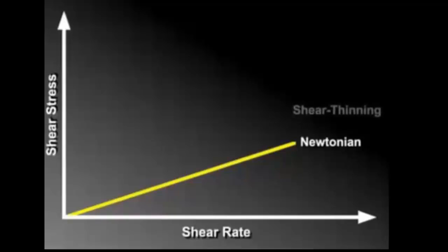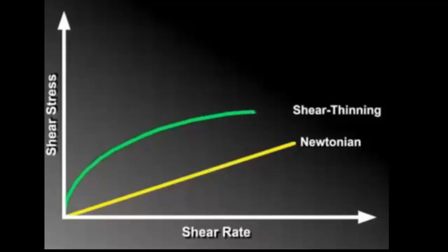Next, consider the shear thinning fluid. Since the viscosity will decrease with shear rate, the slope of the curve will decrease with shear rate. The resulting curve is concaved downward.